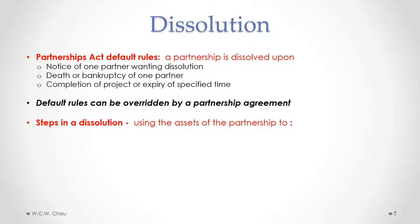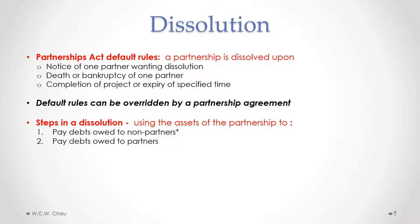If a dissolution is required, there are a number of steps to take. First, the assets of the partnership are liquidated — sold for cash. That cash is first applied to pay the debts owed by the partnership to non-partners, such as suppliers or creditors like a bank. Next, if money remains, debts owed to partners — such as loans the partners made to the partnership — are repaid.